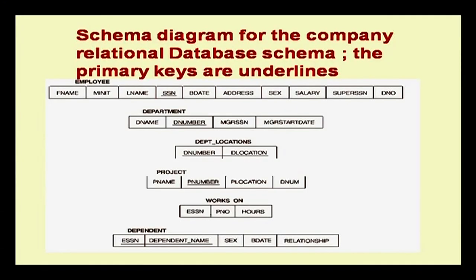This is a diagram for the company relational database schema. Primary keys are underlined. The schema has an Employee relation with many details, Department, Department Locations, Projects, Works On, and Dependent. The employee number provides uniqueness for employees; department uniqueness is given by department number; department location uniqueness is given by both number and location — meaning the same department can be in different locations. We will come into this example in more detail later.